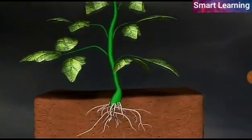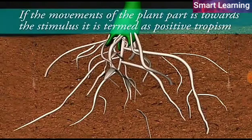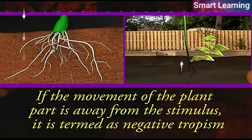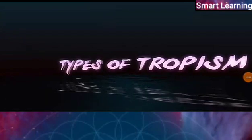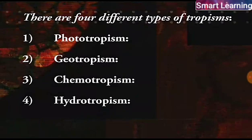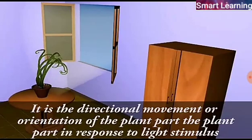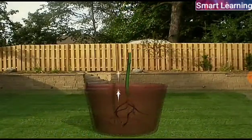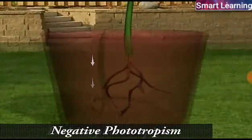Let us understand tropism in detail. If the movement of a plant's part is towards the stimulus, it is termed positive tropism. If the movement is away from the stimulus, it is termed negative tropism. There are four different types of tropism. The first is phototropism — the directional movement or orientation of the plant's part in response to light. If the plant's part moves towards the light, it is called positive phototropism; if it moves away from light, it is called negative phototropism.